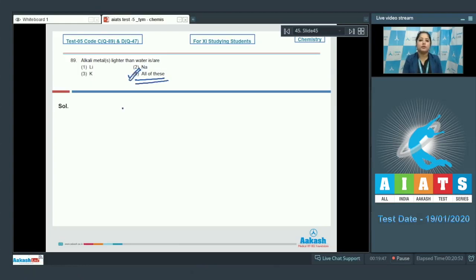I am also writing the value of densities of lithium, sodium, and potassium. So the density of lithium is 0.53 grams per centimeter cube.